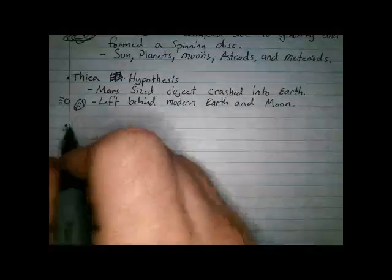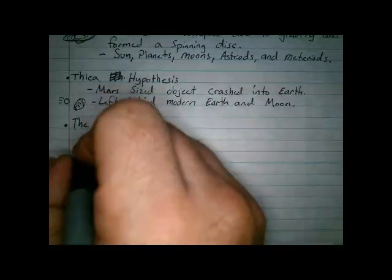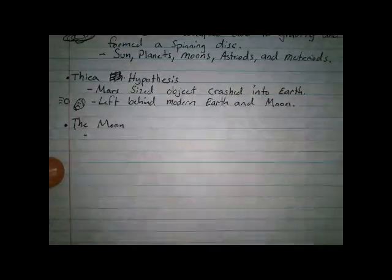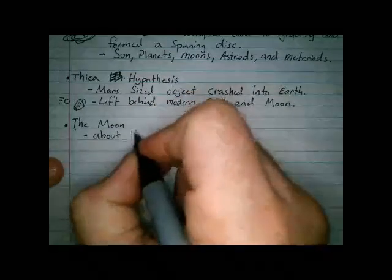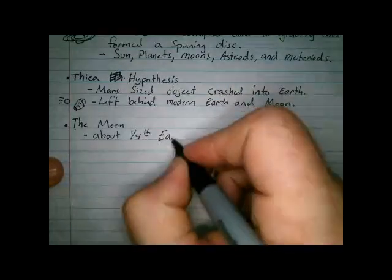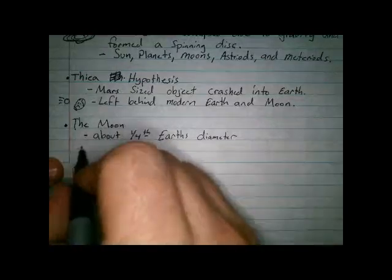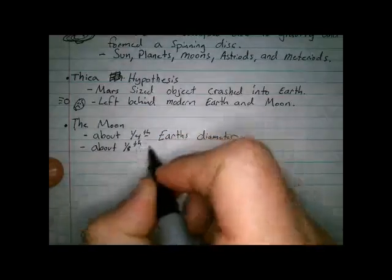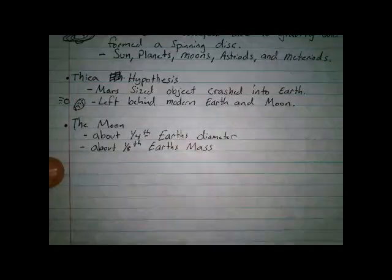Let's talk for a minute about the moon. Now, the moon is about one fourth the earth's diameter and about one eighth earth's mass. This is why gravity is so low on the moon.